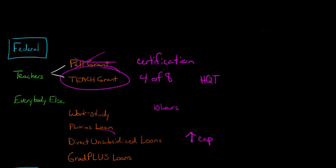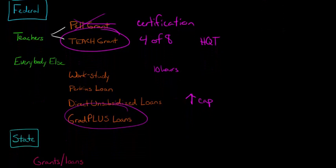If you max out on unsubsidized loans and you still need help with your education, you can get a Grad Plus loan. Graduate students can get their Grad Plus loan. It's basically the same program as the Parent Plus loans, but for graduate students.